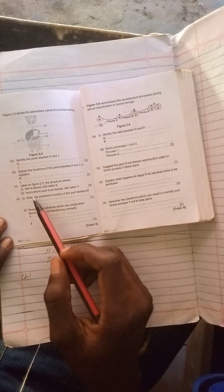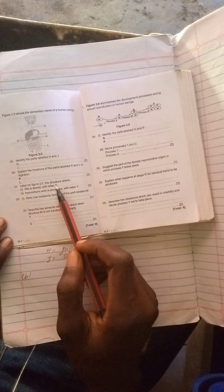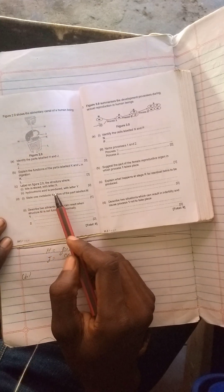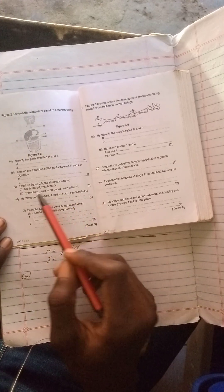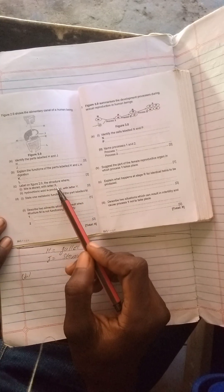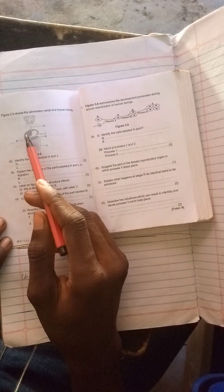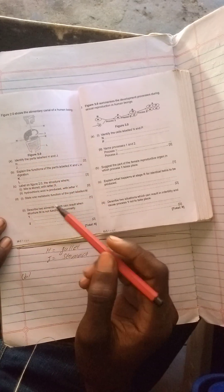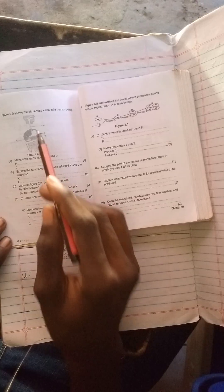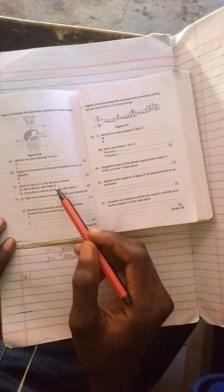Question C reads: label on figure 2.4 the structure where bile is stored with letter X, and where hydrochloric acid is produced. We need to know where bile is stored - bile comes from the liver, so it's stored at the liver. Draw a straight line on the liver and mark it X. Hydrochloric acid is produced in the stomach, so label there with letter Y.